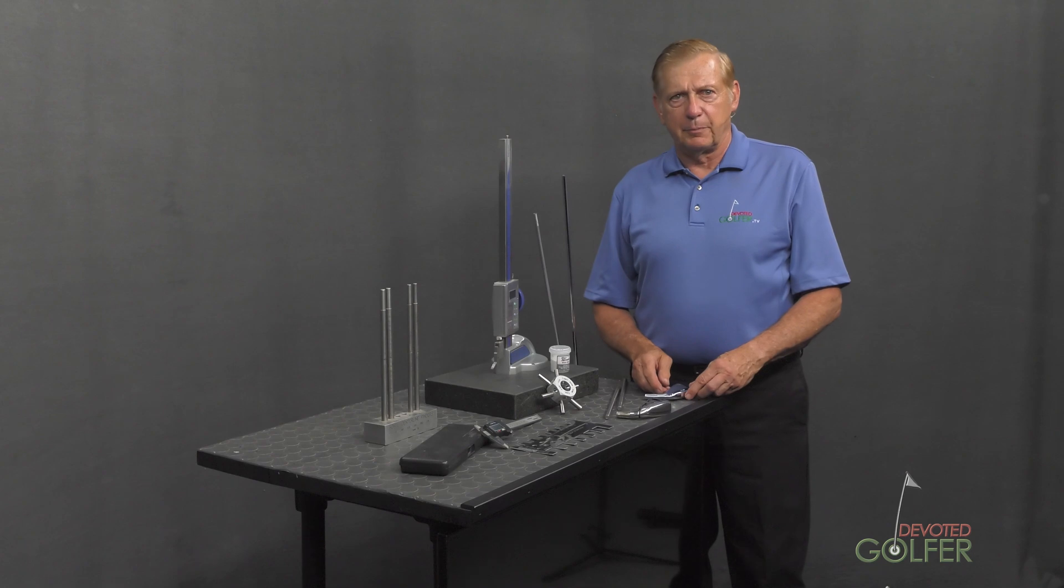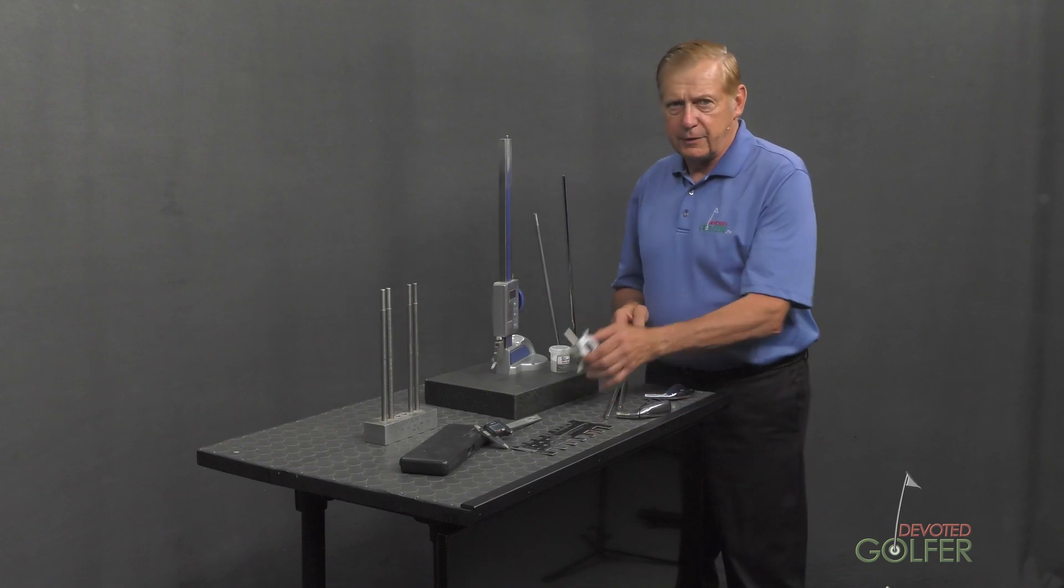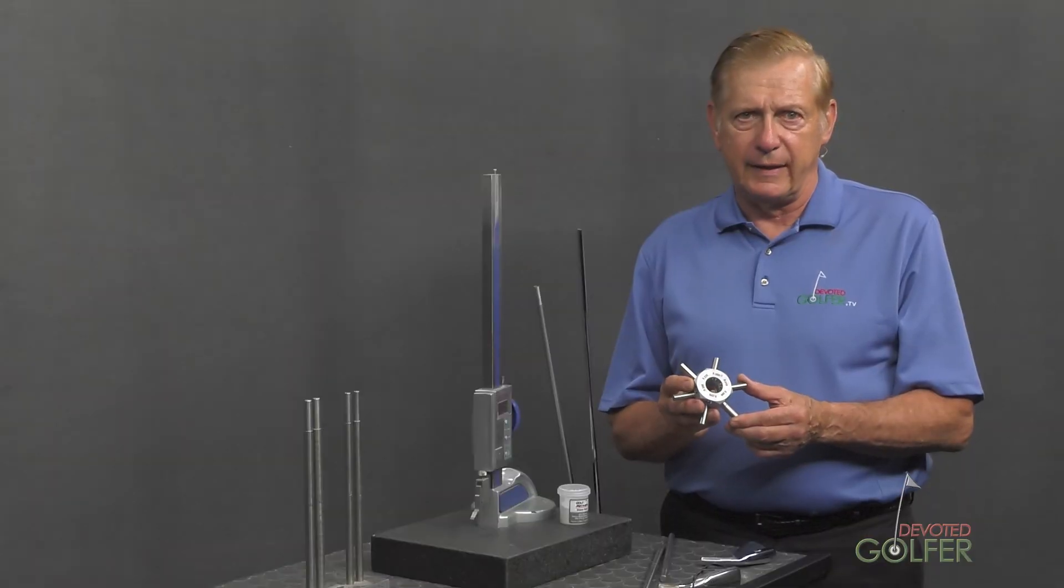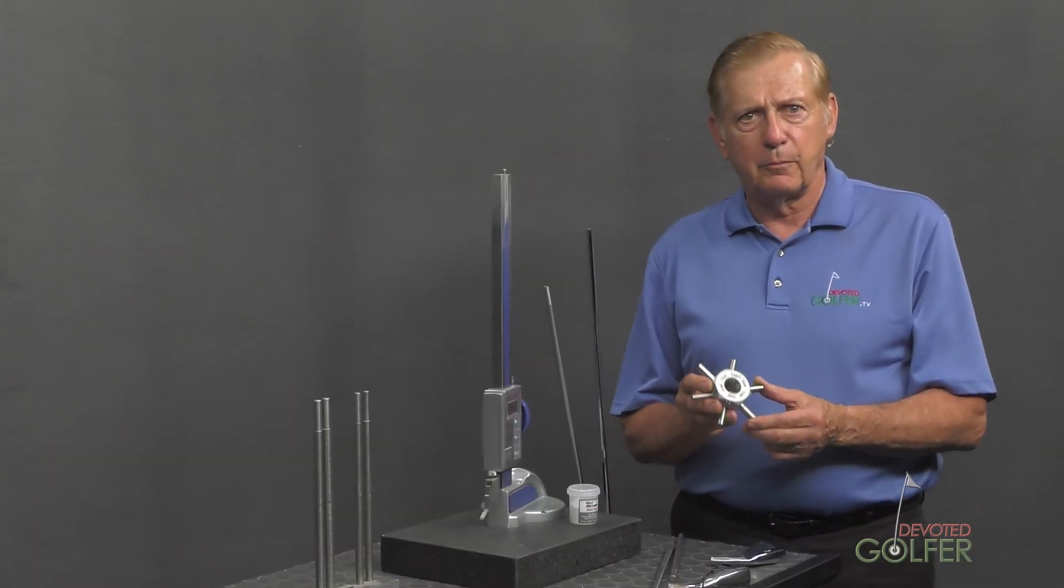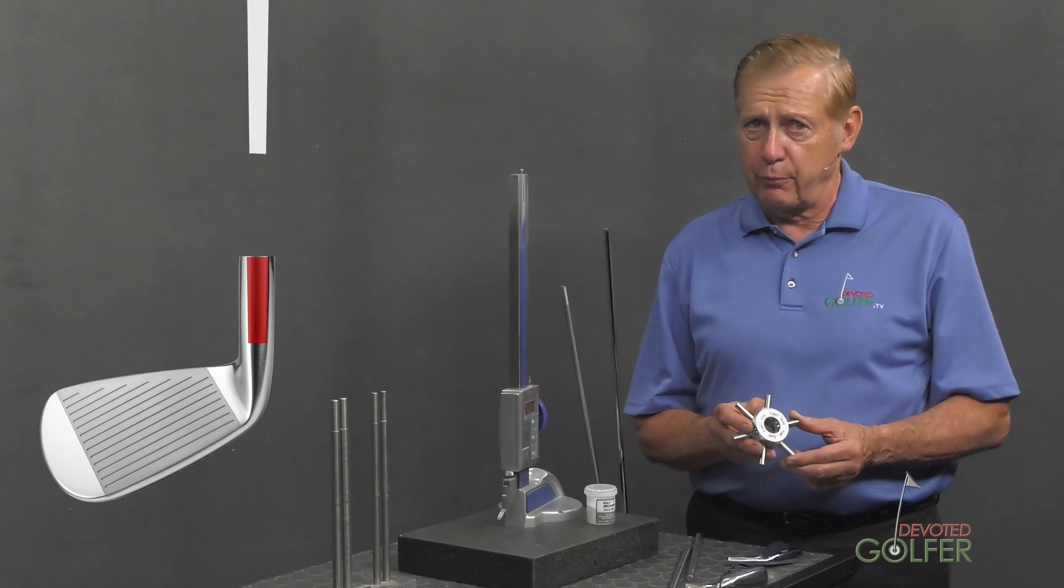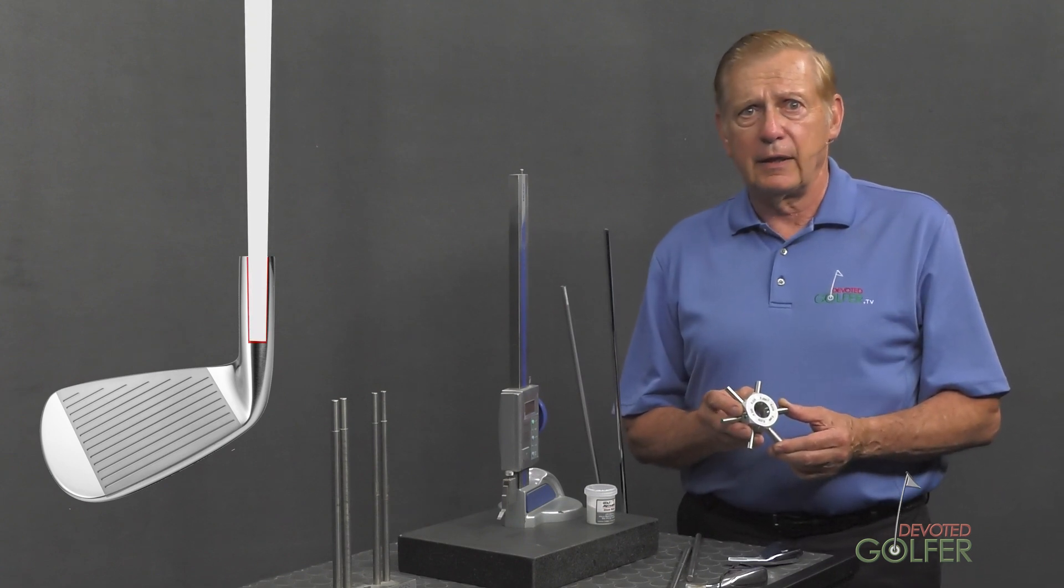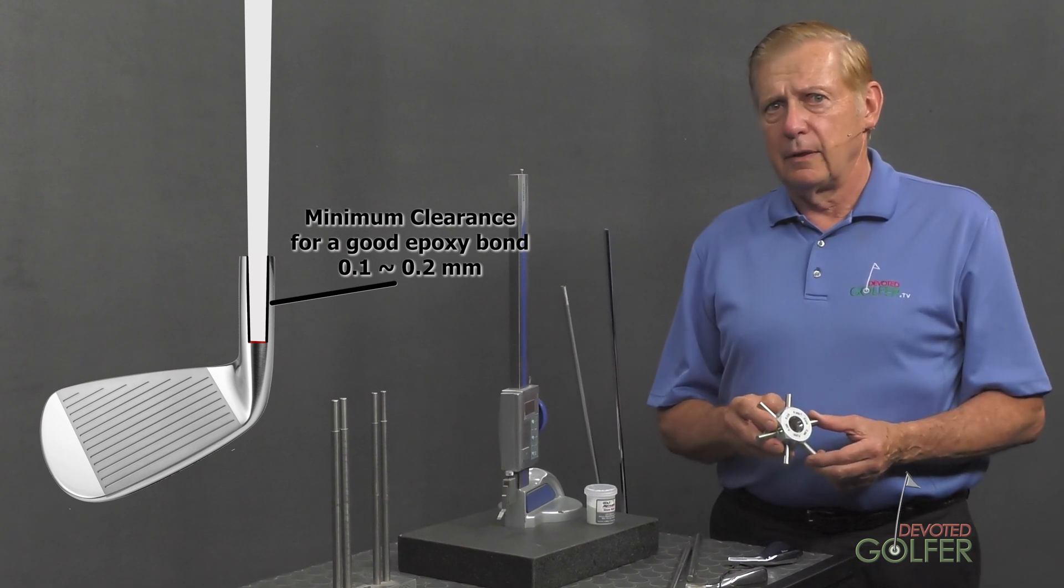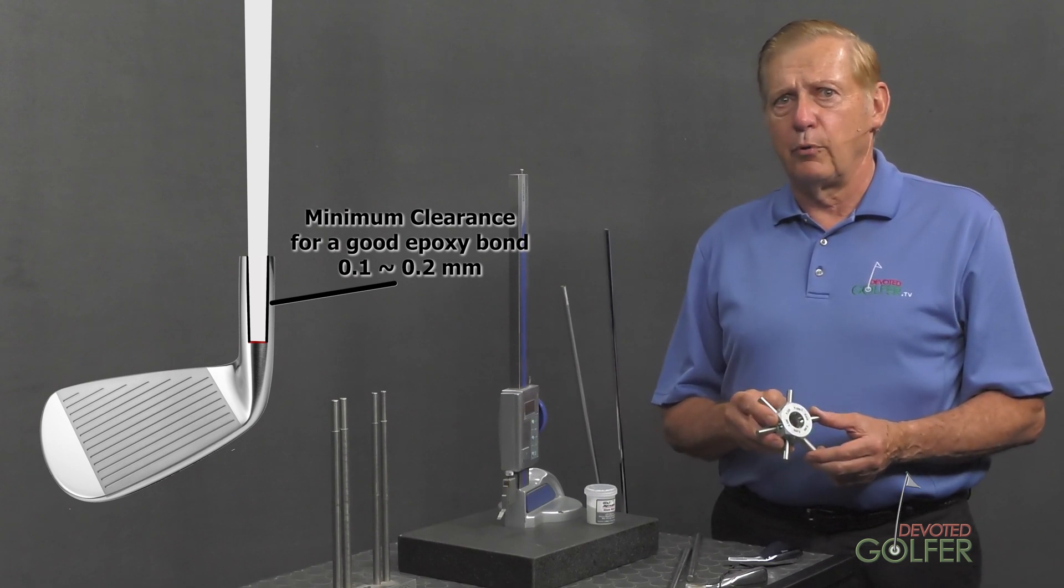As you saw in the last episode, this grip gauge measures both shaft tip OD and hosel ID. It comes with a very important illustration showing the clearance needed for a proper epoxy bond. Take notice of the clearance recommendation for a proper bond: 0.1 to 0.2 millimeters.